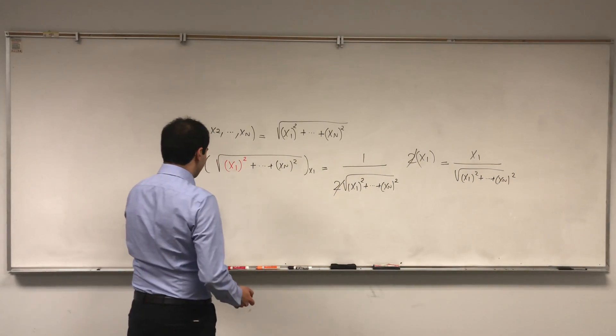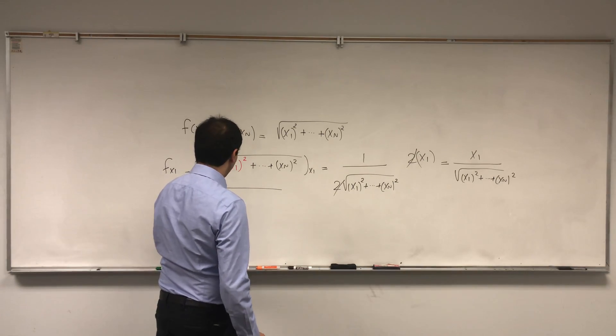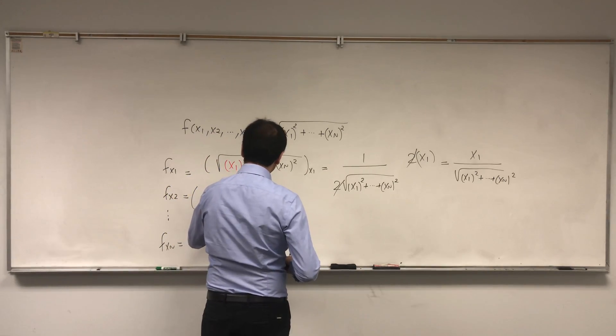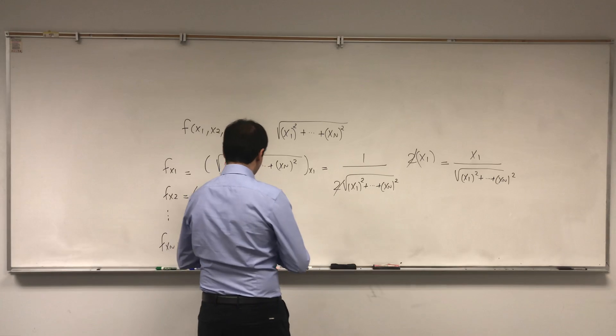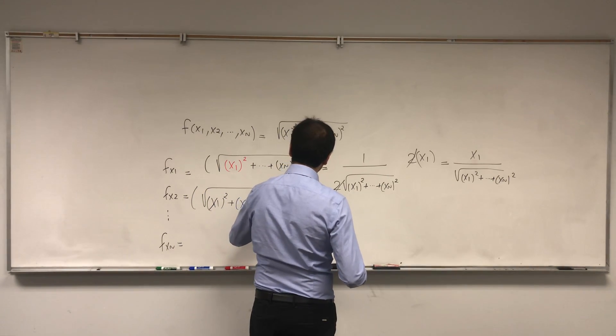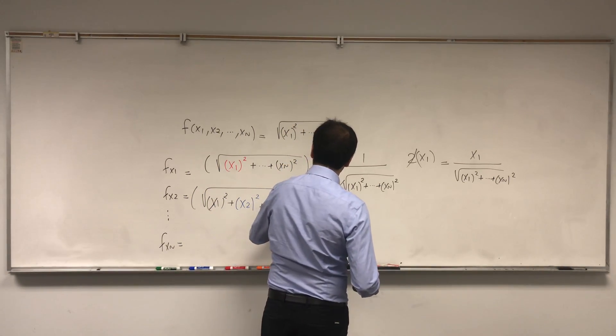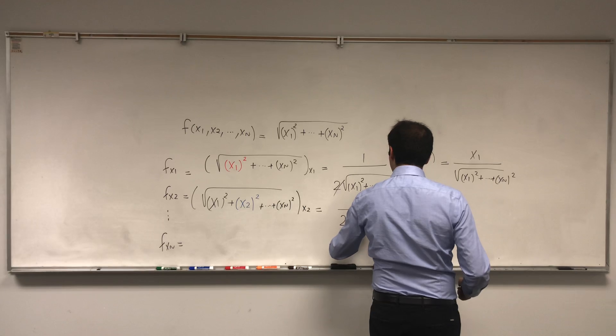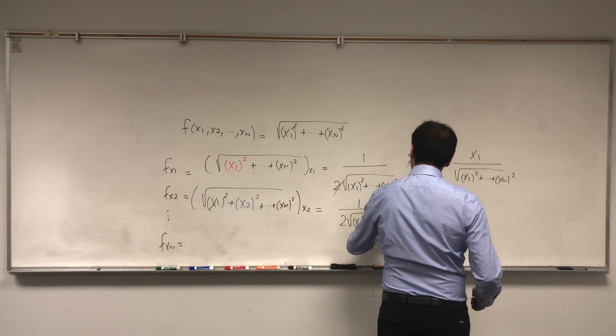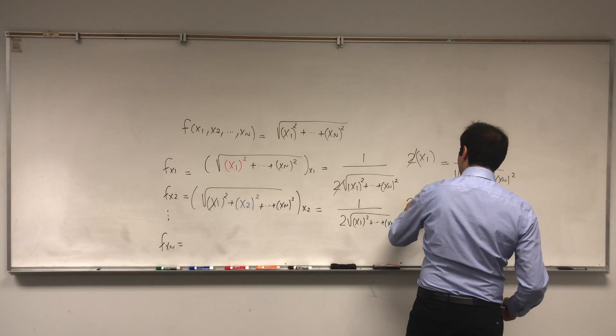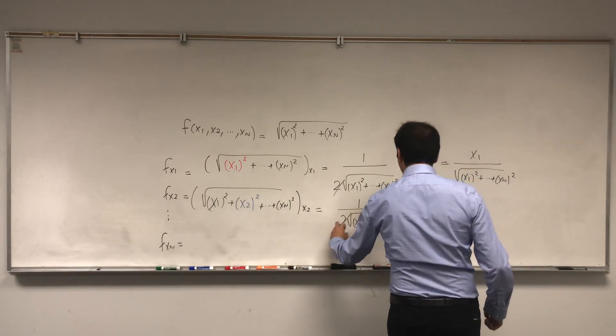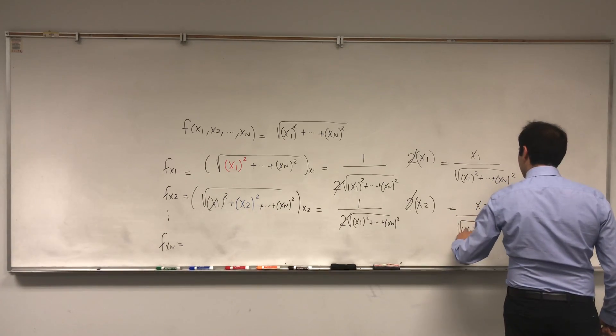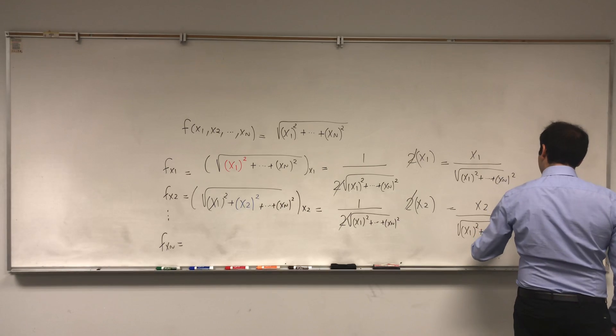Okay, and let's do the same thing for x2, or you can fast forward if you want. So square root of x1 squared plus x2 squared plus dot dot dot plus xn squared with respect to x2. And what this becomes, again, 1 over 2, square root of all your things, times 2x2, which again simplifies to get x2 over square root of x1 squared plus dot dot dot plus xn squared.